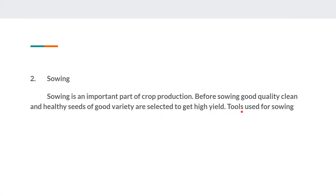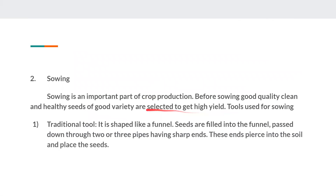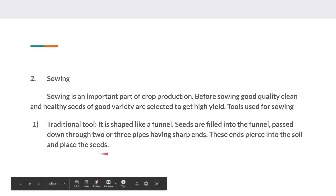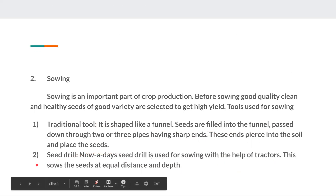Now, the tools used for sowing: the first one is a traditional tool, shaped like a funnel. Seeds are filled into the funnel and passed down through two or three pipes with sharp ends. These ends pierce into the soil and place the seeds. The second one is the seed drill, which is used for sowing with the help of tractors. This tool sows the seeds at equal distance and depth.